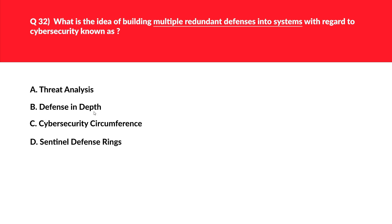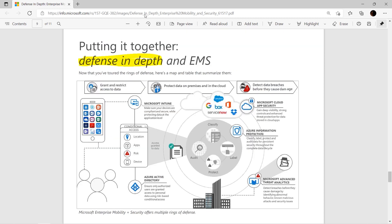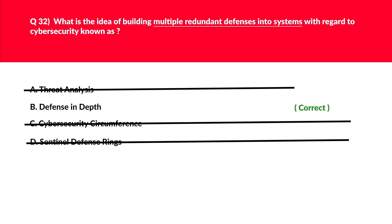Apart from option B, that is defense in depth, the rest of the options don't even exist with regard to cybersecurity or Azure, hence we'll reject all options except option B. If you look at the documentation on the cybersecurity principle defense in depth, it describes the idea of building multiple redundant defenses into systems. The official diagram beautifully describes defense in depth, and we'll log B as the correct answer.